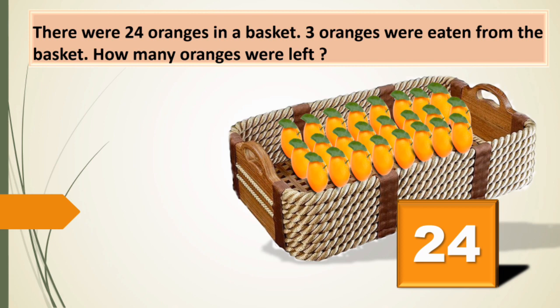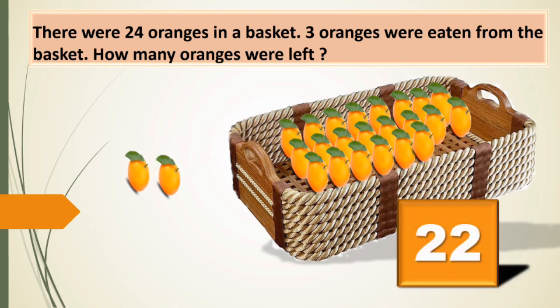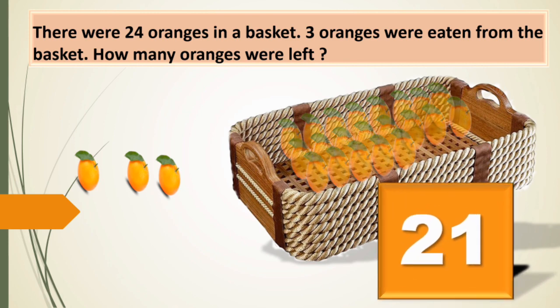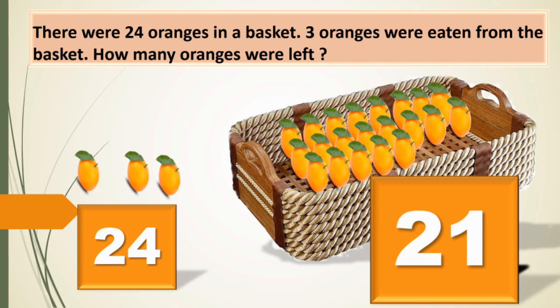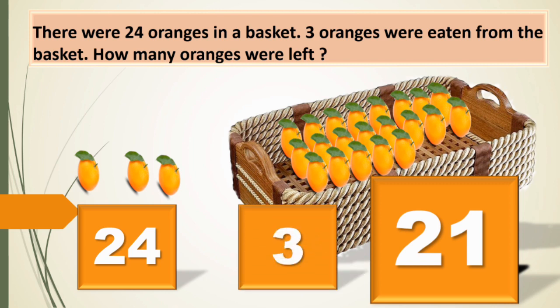We will take 3 oranges to eat. When we take out one orange, now there are 23. When we take one more out of the basket, now there are 22 in the basket. When we take one more, then we have 21 in the basket. It's clear now. There were 24 oranges. 3 oranges were eaten. So 21 oranges were left.